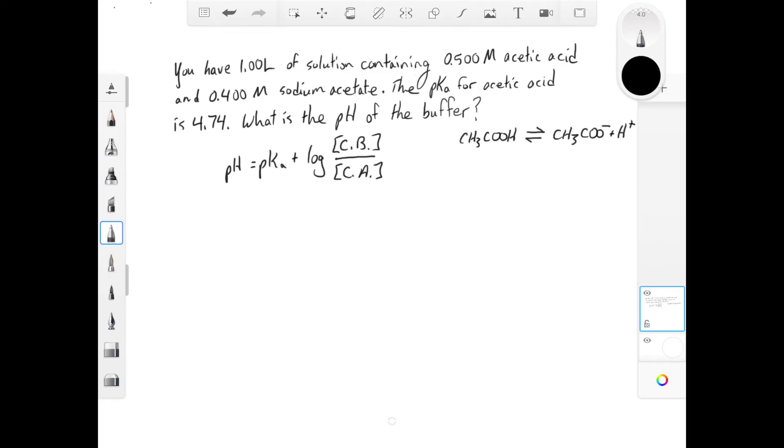So the buffer equilibrium that we care about is acetic acid splits up into acetate ion plus H+. We have 0.4 molar sodium acetate, which is 1 to 1 with the acetate ion. We already know the concentration of our acetate ion and acetic acid, and we can plug all those values in to calculate the pH.